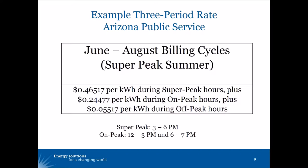The time of use rate can also be made slightly more complicated with a three-period rate, and this example comes from Arizona Public Service. With a three-period rate, you might have off-peak hours that have the lowest energy price — 5.5 cents in this example — on-peak hours where energy becomes much more expensive, 24.5 cents in this example.